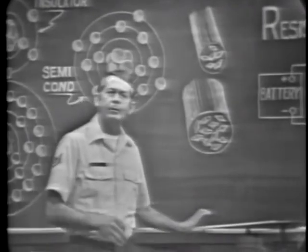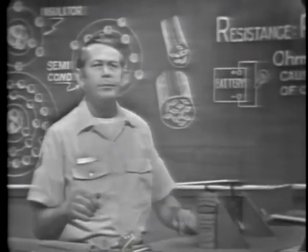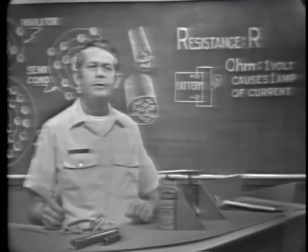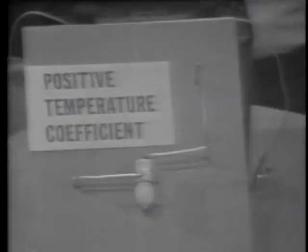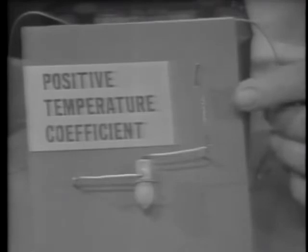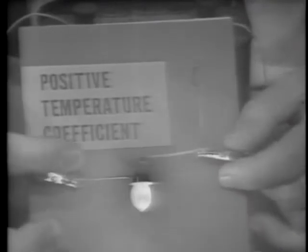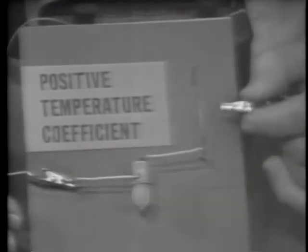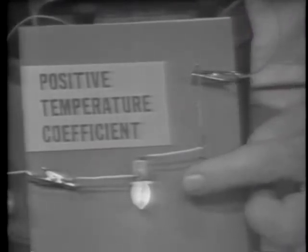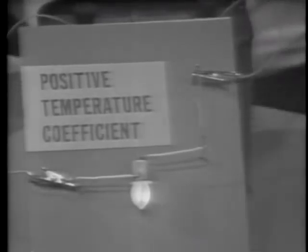The third factor that determines resistance is the temperature coefficient of the material. Temperature coefficient simply means the effect that temperature has on resistance. To show this, we'll use a piece of tungsten — the filament from an ordinary light bulb. First let me check that the circuit is working. Now I'll add the tungsten to the circuit — you can see it had a little effect on current because it decreased the intensity, but when cool it has a small effect on resistance.